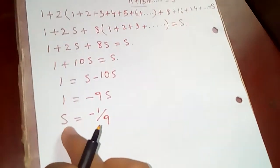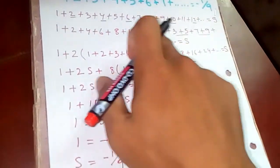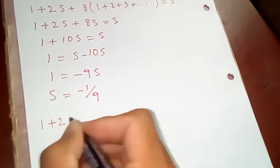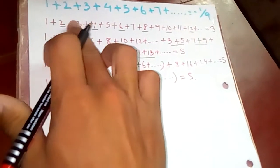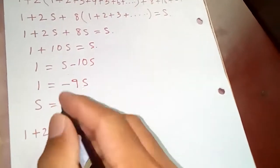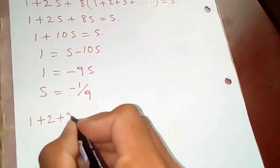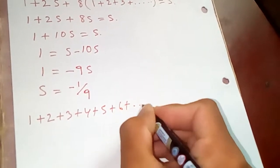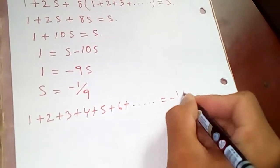So S is nothing but minus one over nine. And one is S. S is our series. This one, S is what? From our beginning, this one, additions of natural numbers: one plus two plus three plus four plus five plus six and so on. So this is minus one over nine.